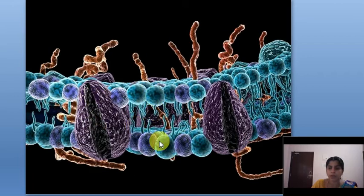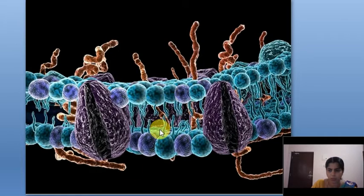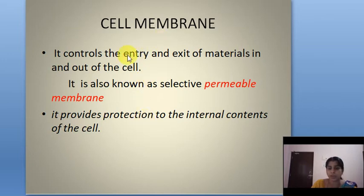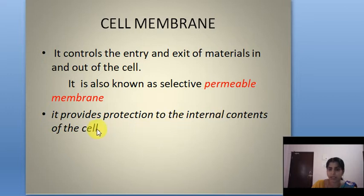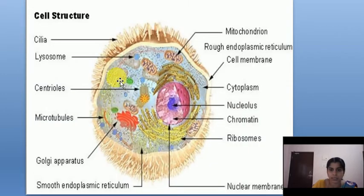The cell membrane forms the outer covering of each cell. It is a living, thin, delicate, and semi-permeable membrane. It has fine pores that help the entry and exit of molecules. The main function of the cell membrane is that it controls the entry and exit of materials in and out of the cell. It allows only selective substances to pass through it, which is why it is also known as a selectively permeable membrane. It also provides protection to the internal contents of the cell.